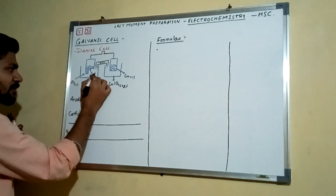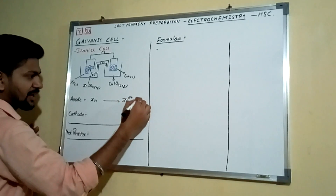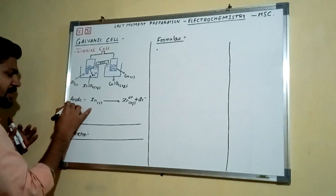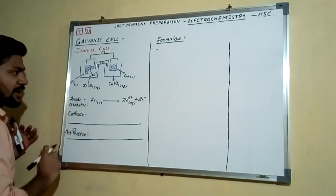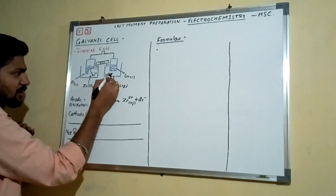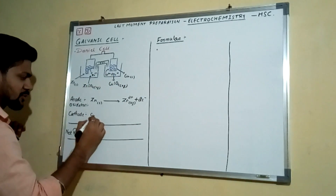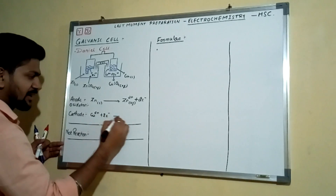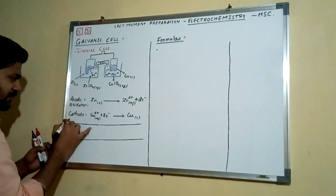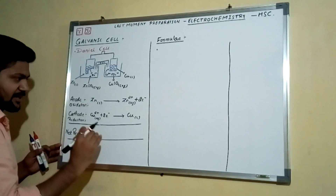When you dip a zinc rod in zinc sulfate solution, zinc atoms oxidize and come into the solution forming Zn²⁺ ions. The reaction is: Zn(s) → Zn²⁺(aq) + 2e⁻. This is an oxidation reaction. On the right-hand side, Cu²⁺ ions in the solution accept electrons from the rod and get discharged: Cu²⁺(aq) + 2e⁻ → Cu(s). This is a reduction reaction.